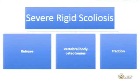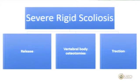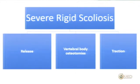For severe rigid scoliosis I organize management into three categories. Group one involves a release — either a posterolateral discectomy or anterior release combined with multiple posterior element osteotomies. Group two involves patients requiring vertebral body osteotomies — those with angular deformities or predominantly sagittal deformity. Group three involves patients who require traction.